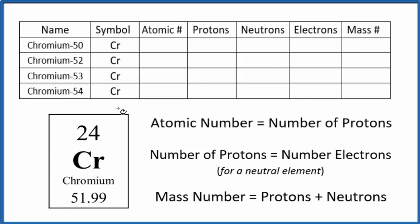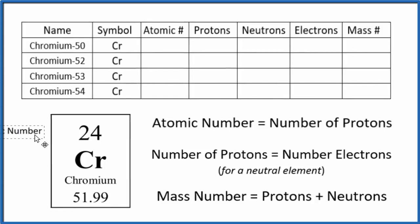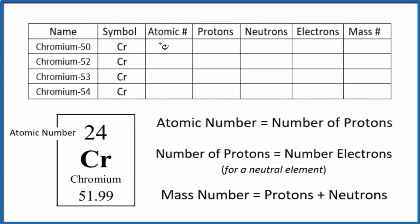So the first thing we can do is go to the periodic table and look at the atomic number for chromium. That's this number right here. So the atomic number for chromium is 24. And that's for all the isotopes of chromium. It's always 24.